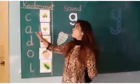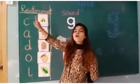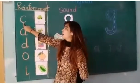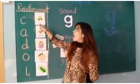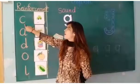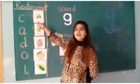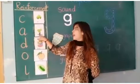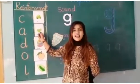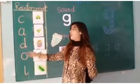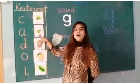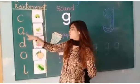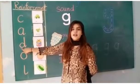Now we are going to reinforce the sounds with the vocabularies. Come on, let's do it. C — car. Well done. A — aeroplane. What is this? This is an airplane.